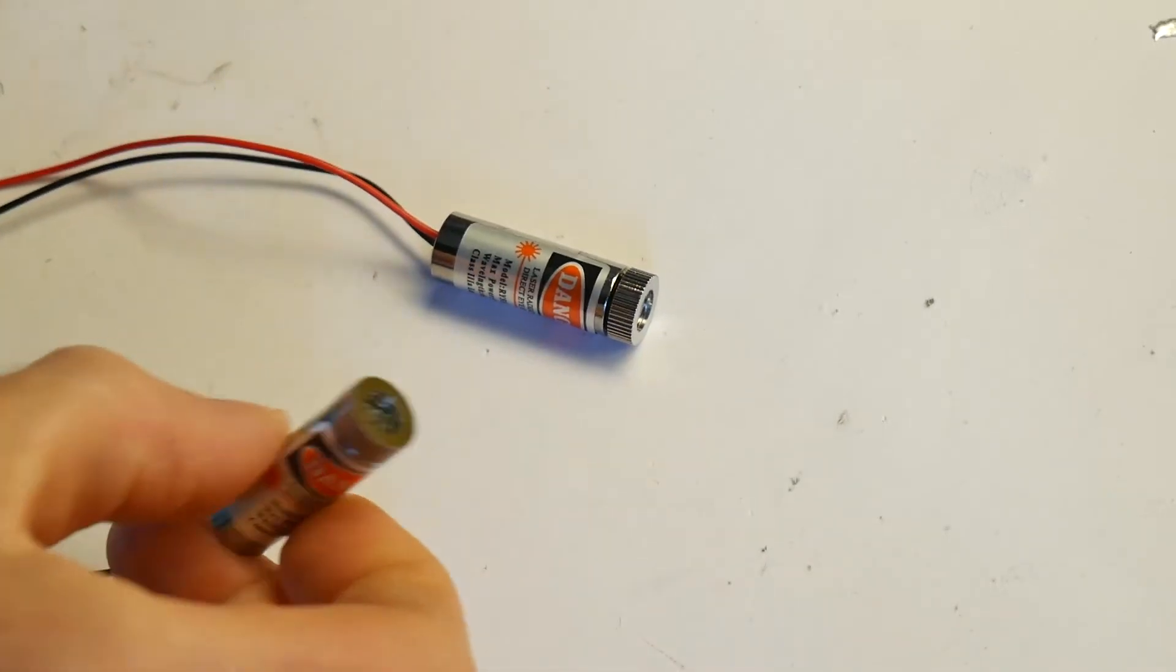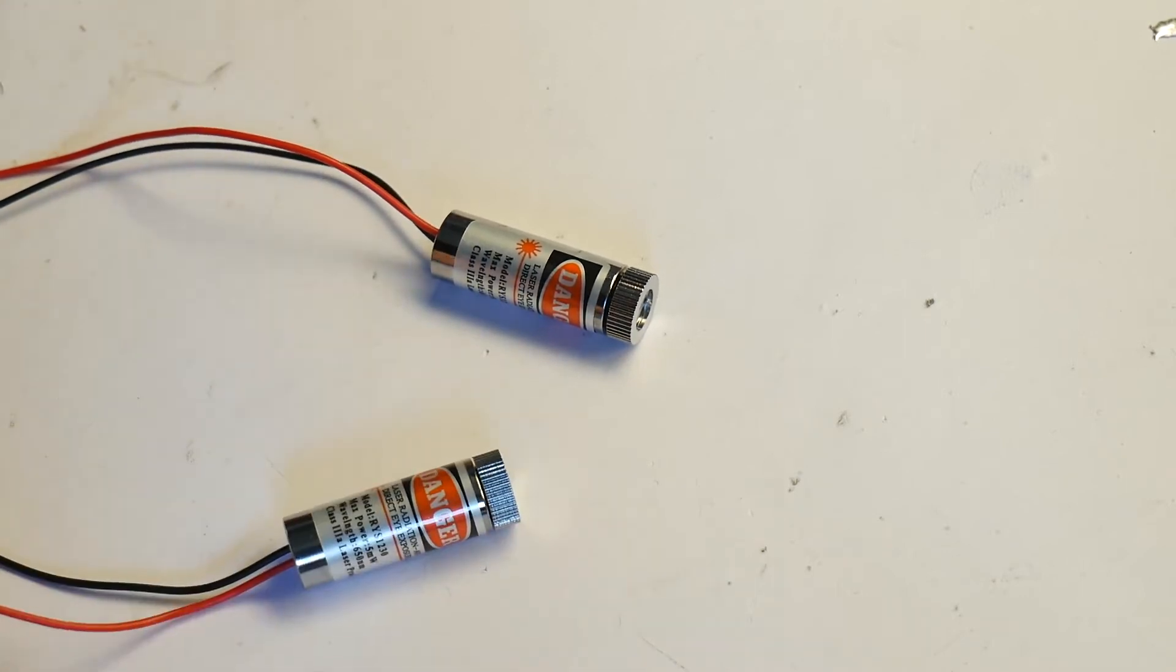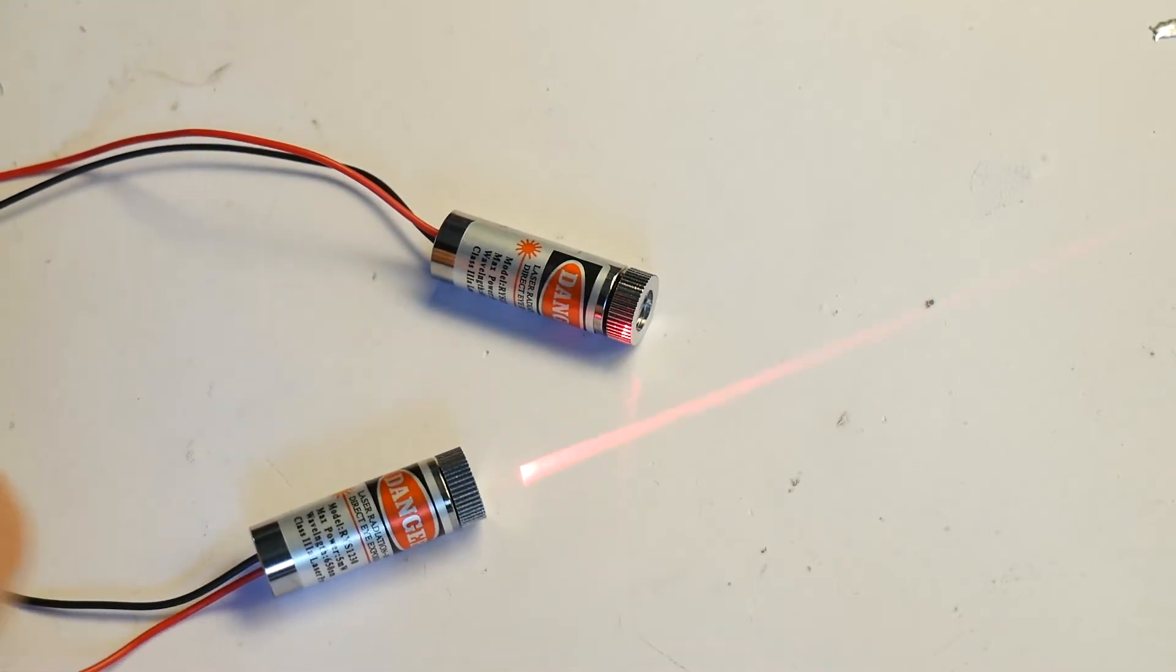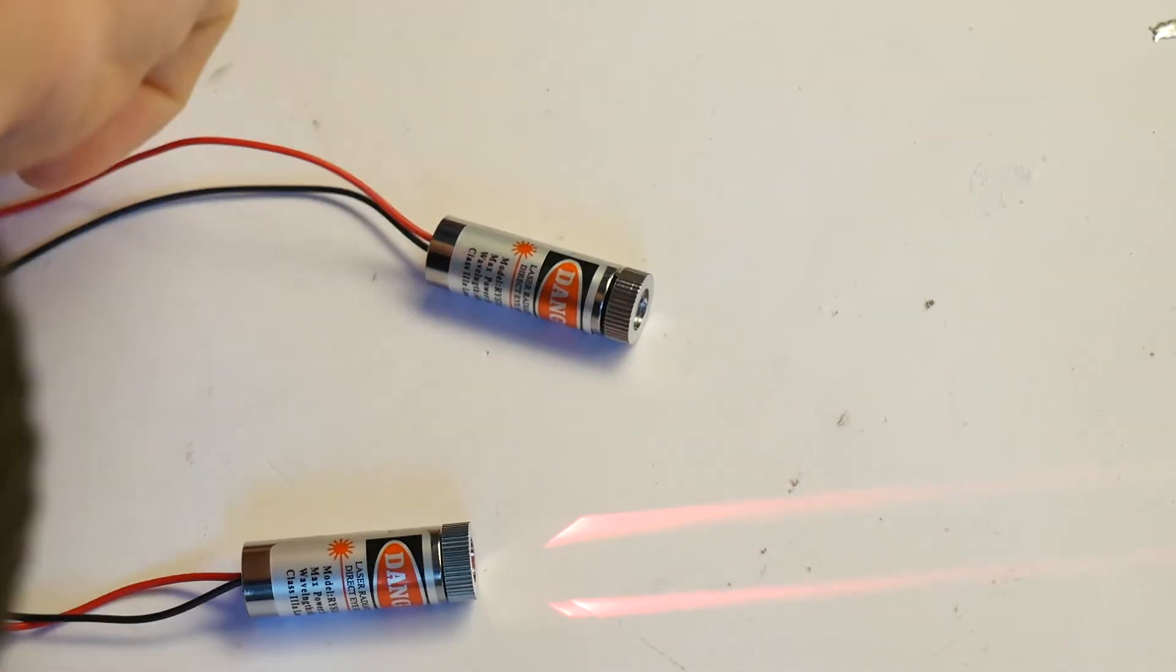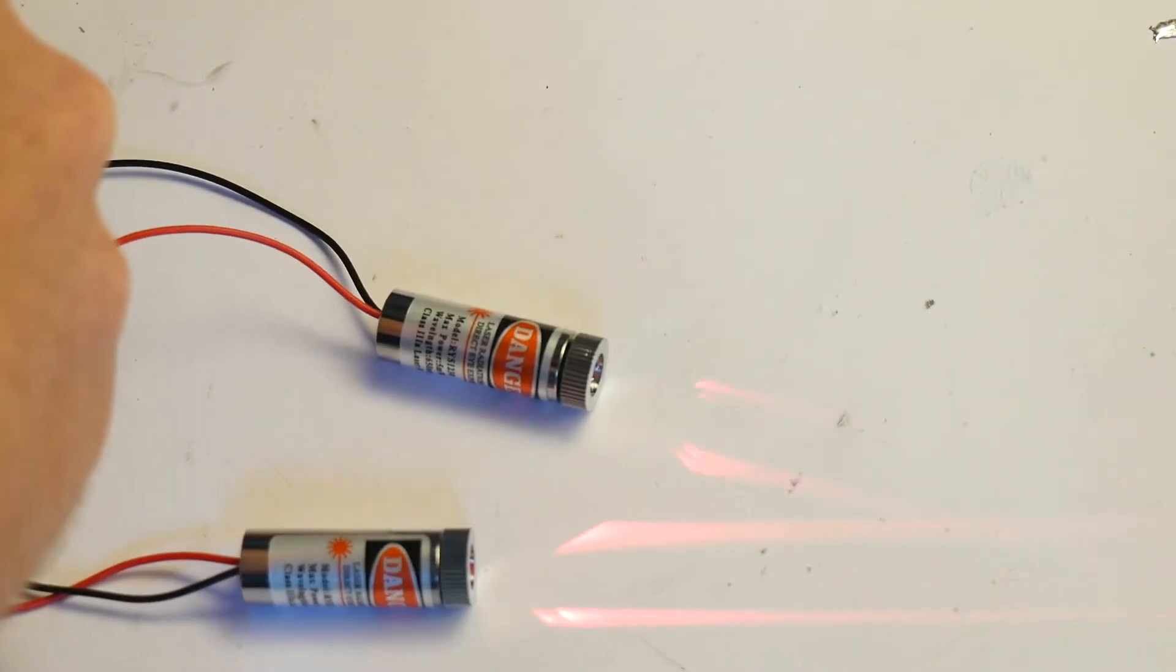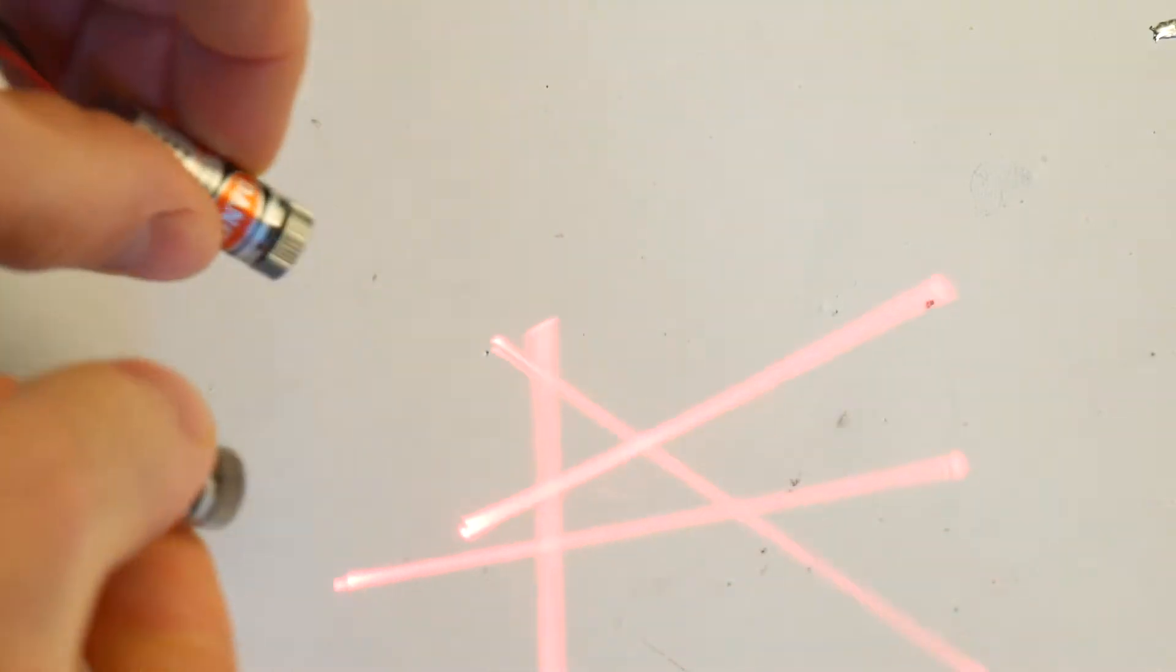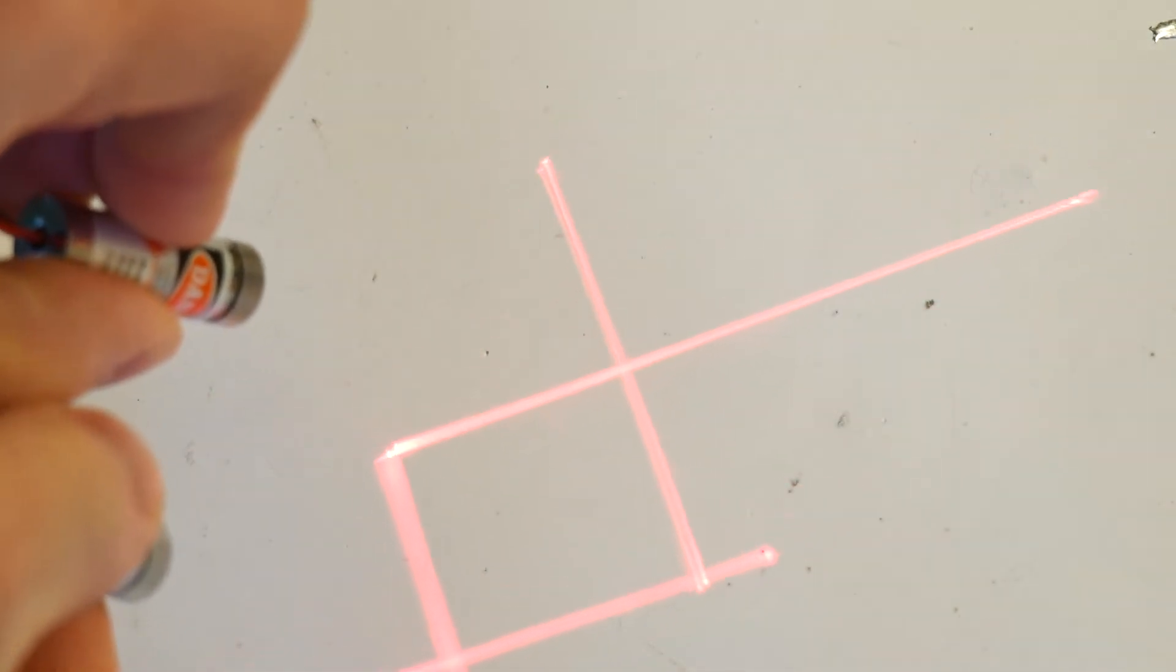So all you have to do is get some cheap cross-patterned lasers from eBay. When you apply power to these things, they actually project a cross-pattern out of laser light. If you get two of them, you can easily arrange that they project a rectangle and that rectangle can show you what's visible and what's not.